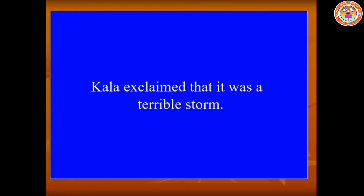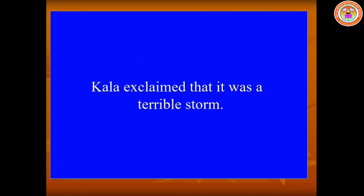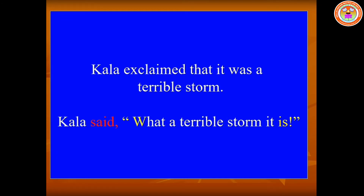Next one: 'Kala exclaimed that it was a terrible storm.' From the reporting word 'exclaimed' we can understand this is an exclamatory sentence. We have to remove the conjunction 'that' and insert a comma and quotation mark. 'Exclaimed' should be changed as 'said to' and we have to insert 'what'. The verb 'was' should be changed as 'is'. In this sentence we don't have an object pronoun, so we don't write 'said to', we can write 'said'. Kala said, 'What a terrible storm it is!' Remember, we have to put the exclamation mark at the end of the exclamatory sentence.